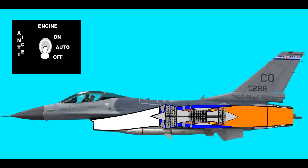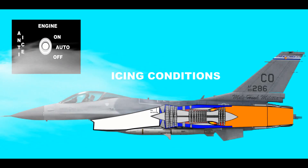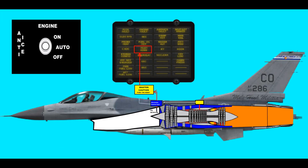In F-16 aircraft, the ice prevention system is managed by an electronic control unit based on the position of a switch with off, auto, and on positions. In the off position, the system is disabled by the pilot and the anti-ice system will not work at all. If the switch is set to on, the system is fully activated. While in the auto position, when the icing sensor located in the aircraft air intake detects icing, the inlet icing lamp on the caution panel in the cockpit lights up together with the master caution warning lamp, and the pilot is alerted.